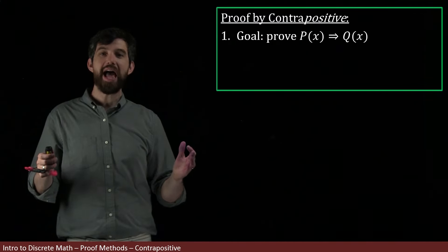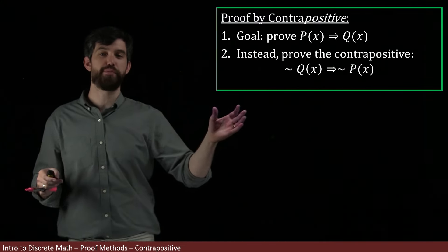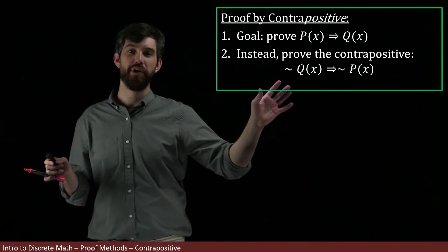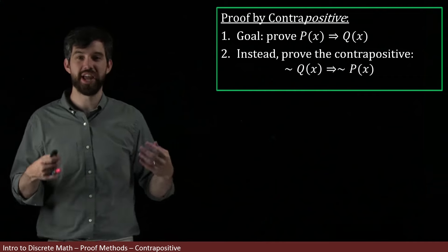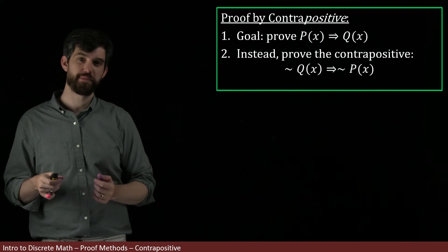That is, I'm instead going to try to prove the contrapositive. I'm going to prove not Q implies not P, and that's the way I'm going to demonstrate that P implies Q. So let's see an example.